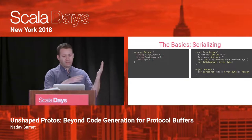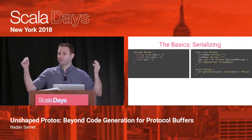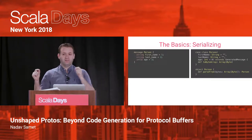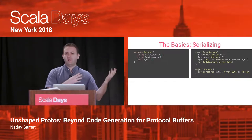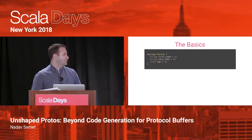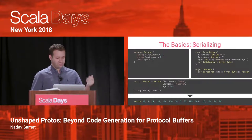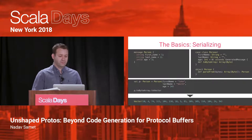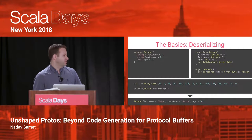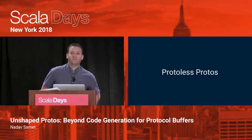On the left side you'll see the protocol buffer, and on the right side a simplified version of the code that gets generated. You'll see a case class that has a field corresponding to every field in the protocol buffer. There is a method called toByteArray that takes the instance and returns an array of bytes in the protocol buffer binary format. In the companion object, there is an inverse method called parseFrom which takes an array of bytes and gives back the instance of a person we just serialized. That's everything you need to know about protocol buffers for this talk.